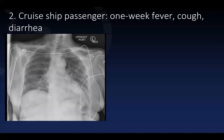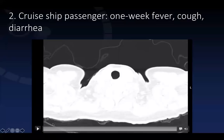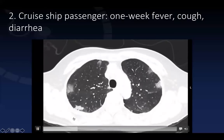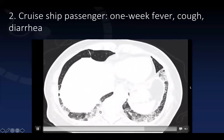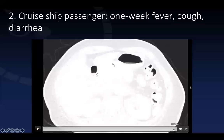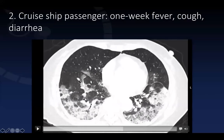The next patient is a cruise ship passenger with one week of fever, cough, and diarrhea who had been quarantined. You can see patchy areas of ill-defined opacities on the chest x-ray, and three days later there is progression with increased ill-defined opacities. On CT, scrolling through, one sees peripheral areas of patchy ground glass and more consolidated opacities. As we get toward the lung bases, you can actually see crazy paving — the sign combining ground glass with inter- and intralobular septal thickening — most evident in the dependent aspect of the left lower lobe.